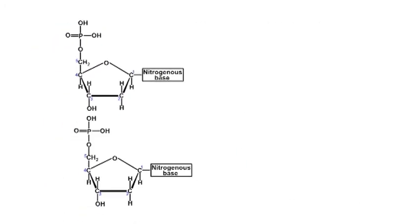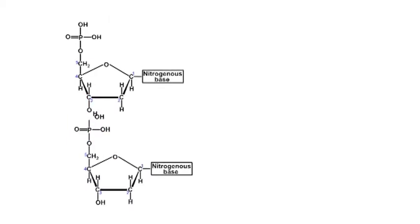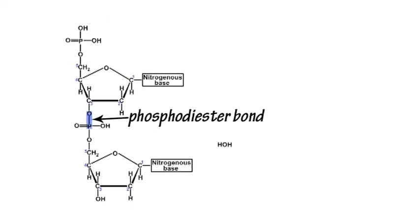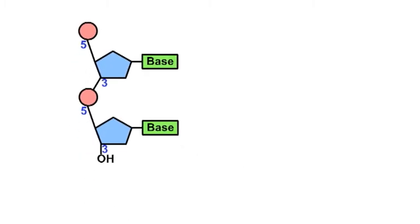The phosphate group of one nucleotide can react with the hydroxyl group of carbon-3 of the sugar of the other nucleotide in a condensation reaction, forming a phosphodiester bond and water. A series of such condensation reactions between nucleotides produces a polynucleotide.